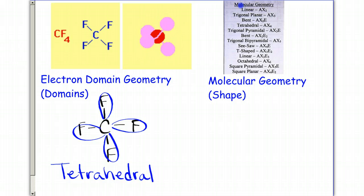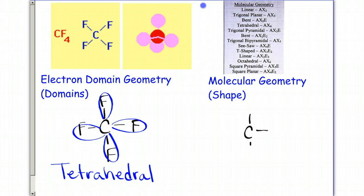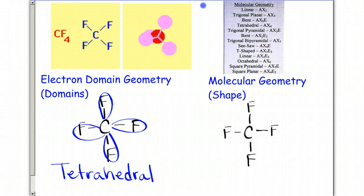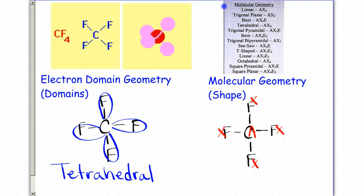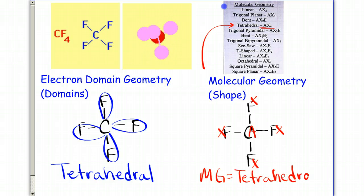Recall this from your notes. For the molecular geometry, we want to look at the shape of the molecule, so we're going to do the A's, X's, and E's. My center atom is labeled A, and each of my bonded atoms is labeled X. Looking at the list, AX4 is tetrahedral again. Notice in this instance, the electron domain geometry and the molecular geometry are exactly the same.